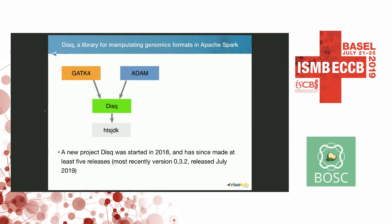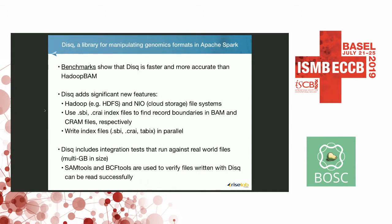We're guilty of the version 1.0 problem — we've had five releases so far, the last one just a couple of weeks ago: version 0.3.2. Benchmarks show that DISC is actually faster than Hadoop BAM; those serial steps have been made parallel and we've resolved the BAM splitting issue.